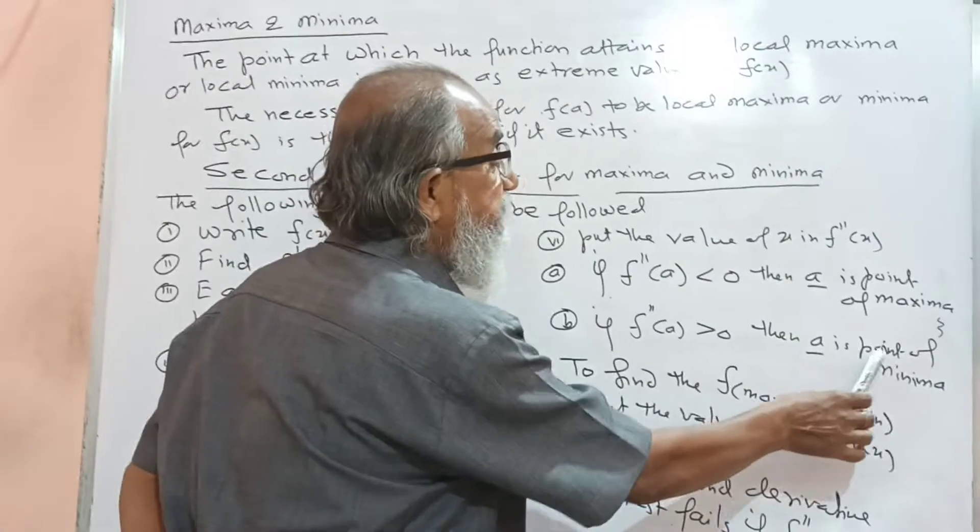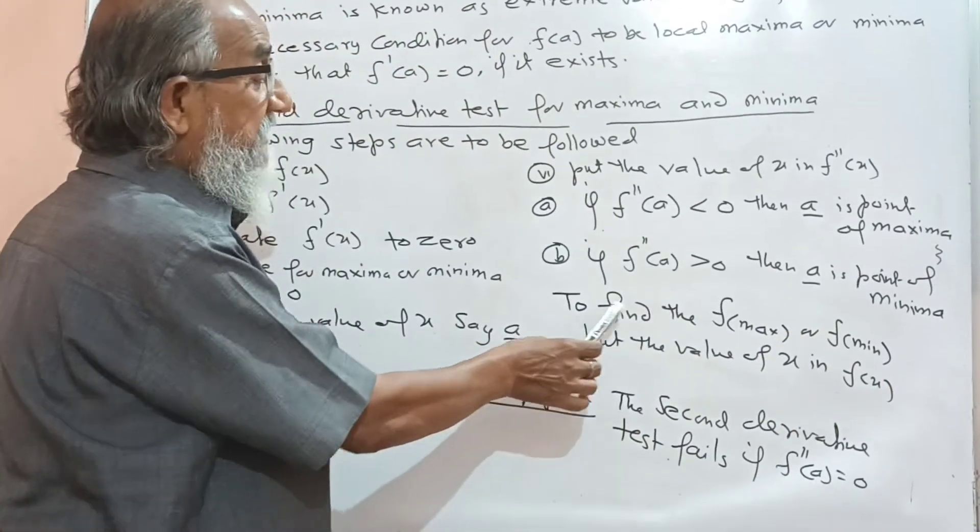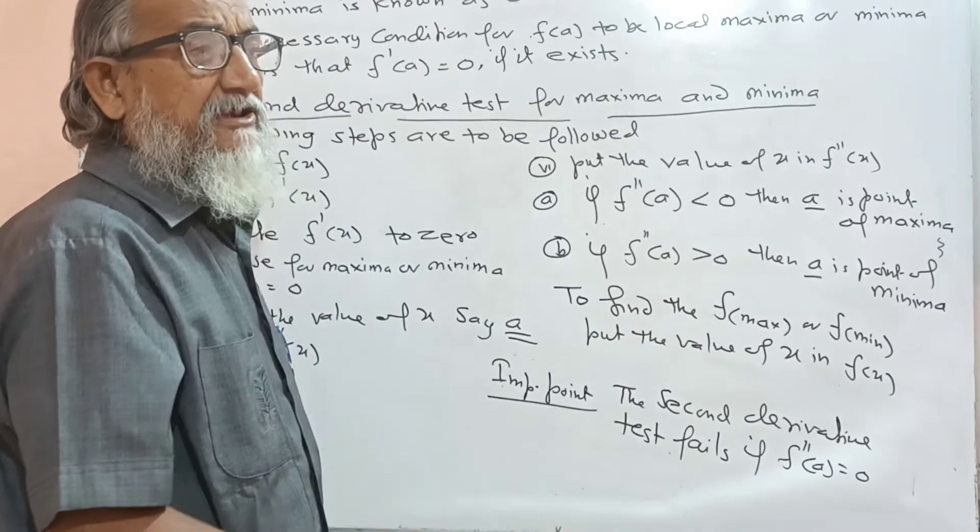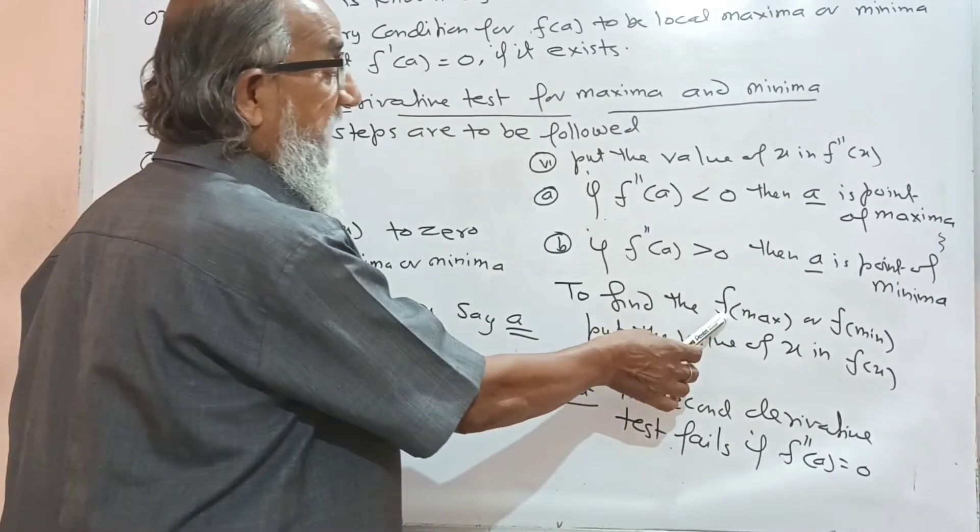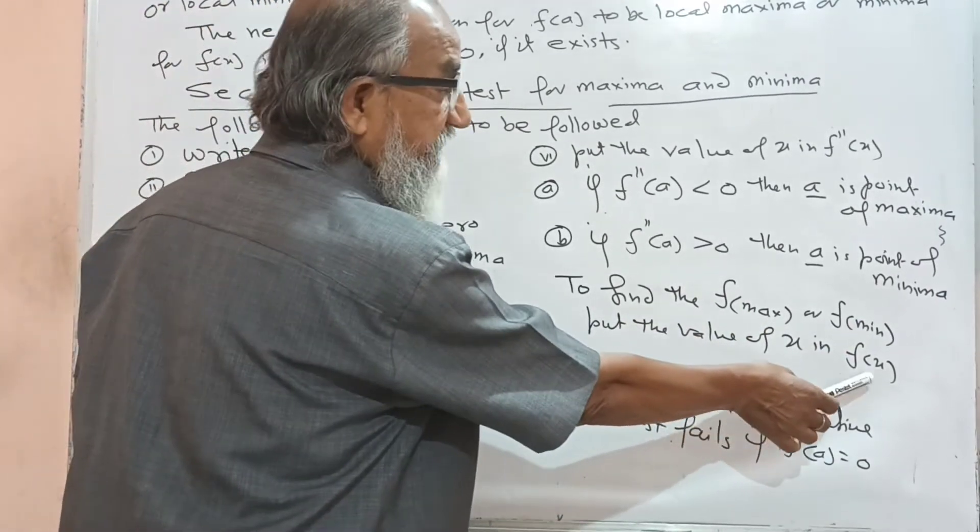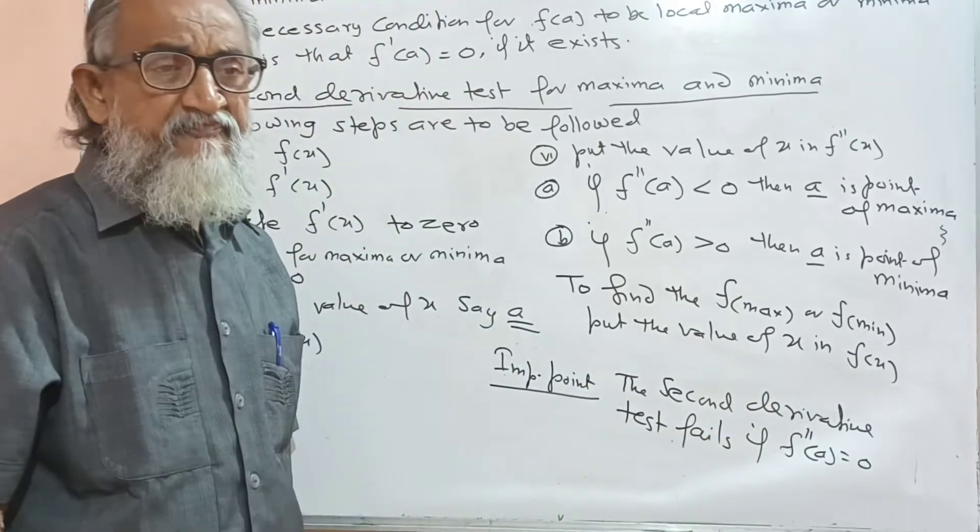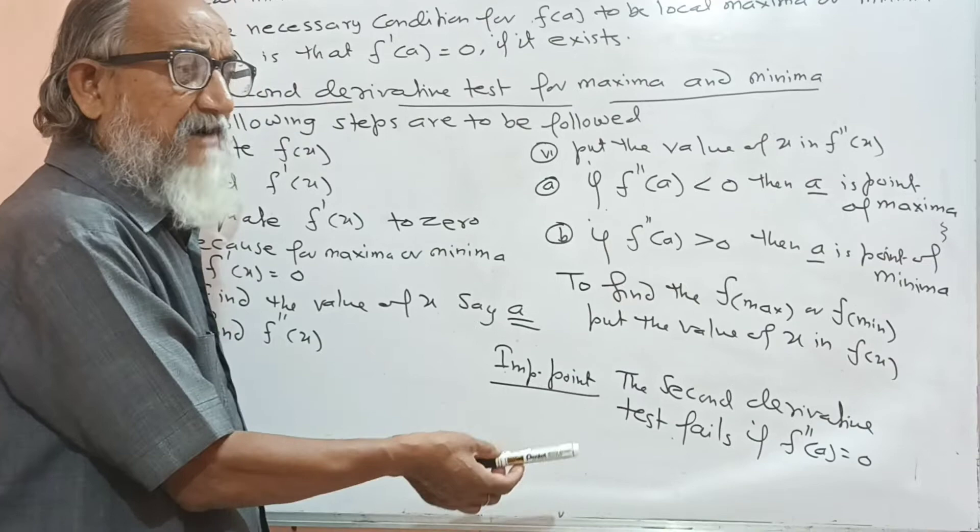To find the maximum or minimum value of the given function, that is to find f_max or f_min, put the value of x in f(x). That will give you the maximum value or minimum value of the function.